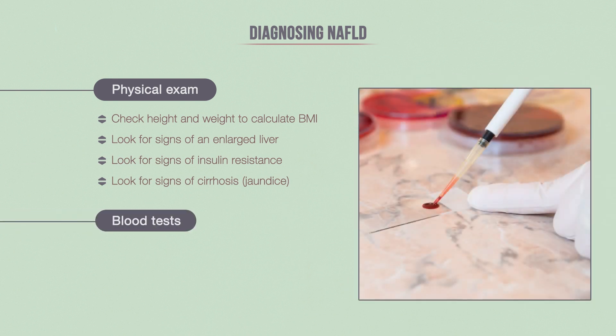Blood tests will then be ordered to look for any abnormalities. Examples of these tests would be a liver function test, complete blood count, and a fasting blood sugar test.